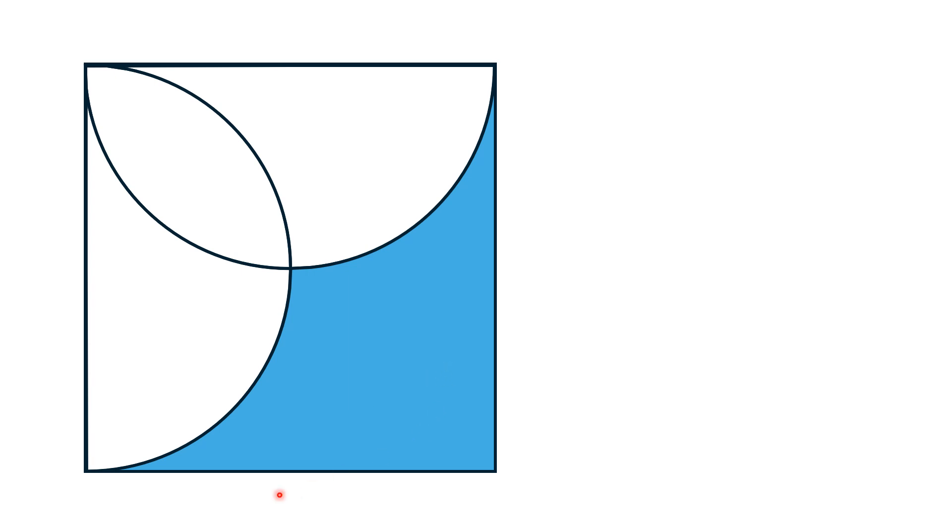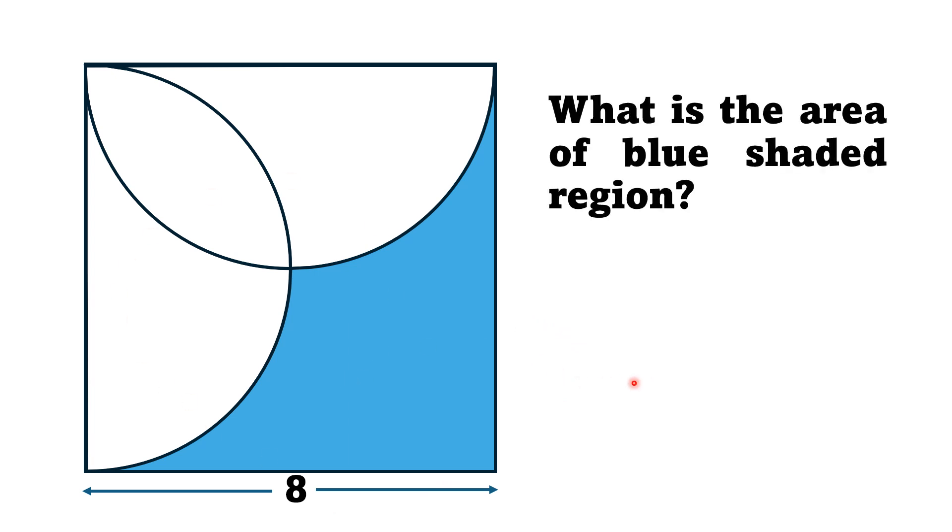If the side length of this square is 8 units, then by this limited data, we have to find the area of blue shaded region.